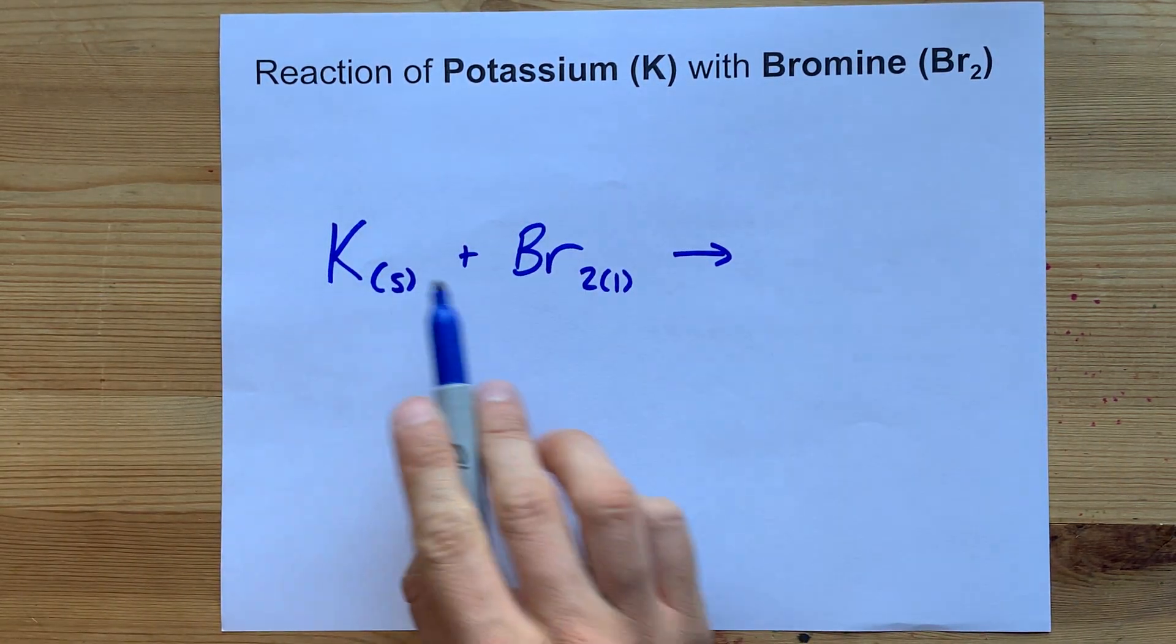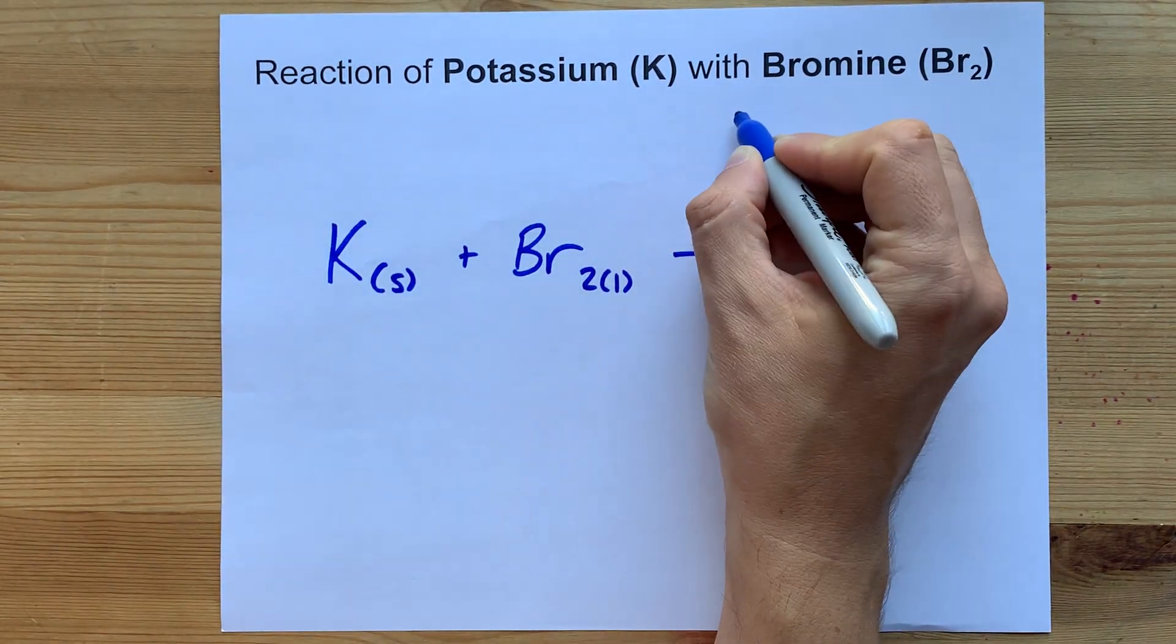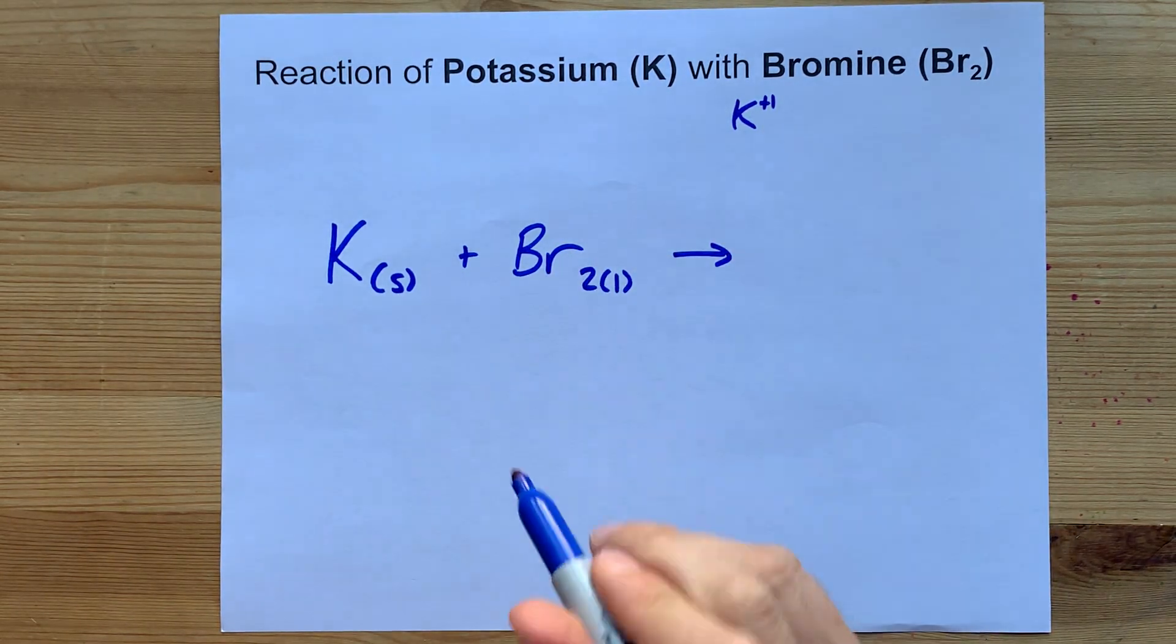Now, a metal and a non-metal usually combine to make an ionic compound. The K, or potassium, likes to have a charge of plus one because it's in the first column.